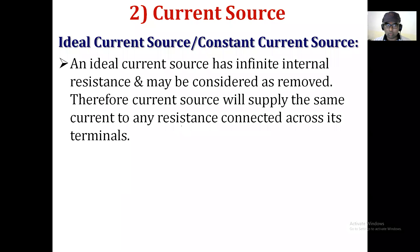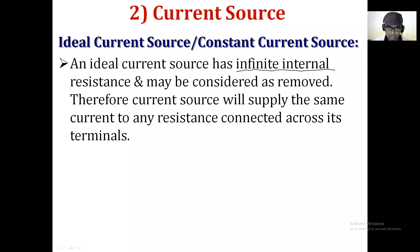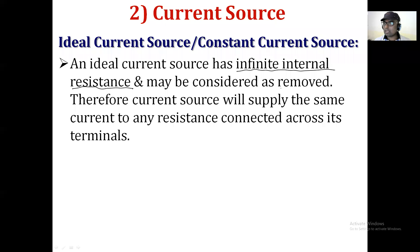Ideal current source has infinite internal resistance — again this is an important MCQ-type question. The ideal current source has infinite internal resistance and may be considered as an open circuit, because current always takes the least resistance path, and if the internal resistance is infinite, no current will flow through it.